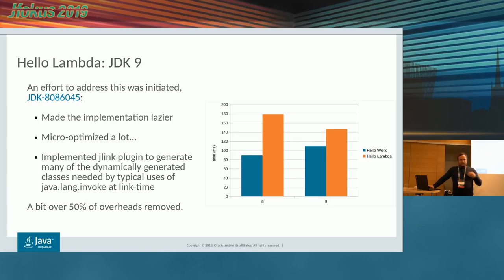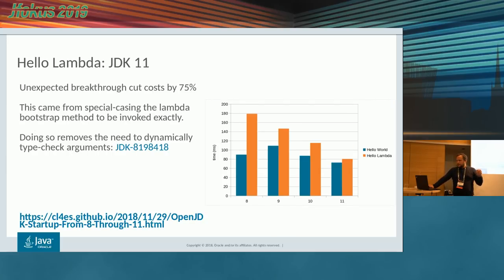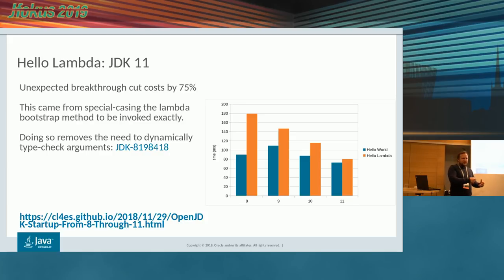Even though startup in general regressed in Java 9, if your application had one or a few lambdas you were actually improving even on Java 9. We kept improving in 9 and 10 as well. Then I realized that most of the method handle adapter stuff we did in setting up the first initial invocation of a lambda was actually unnecessary — an artifact of not using static type information in the code that called the bootstrap method. We fixed that, getting rid of another 75% of the overhead.